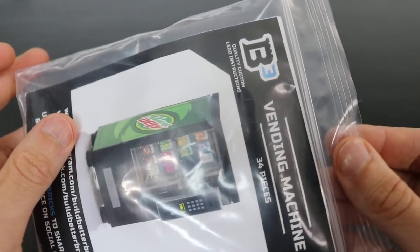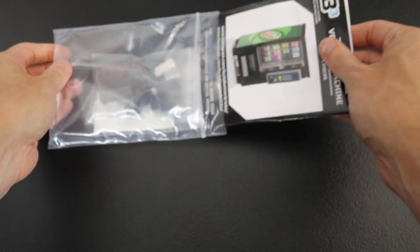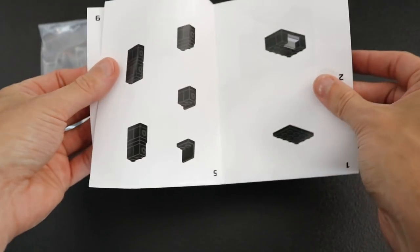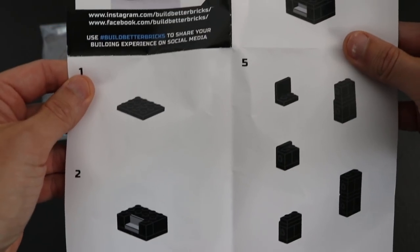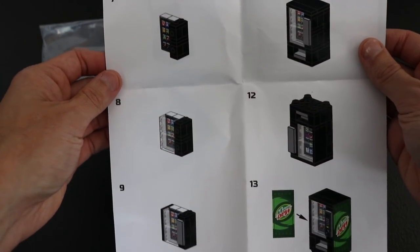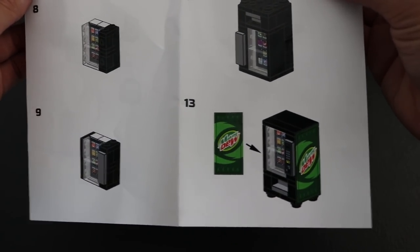So let's open this up and see what we got ourselves here. Opening the bag, these are most likely the instructions, and looks like they did a decent job at laying this out, how to build it. It looks fairly simple. There's five steps on the front and it goes up to 13 steps in the back, which the last step is just putting the stickers on.